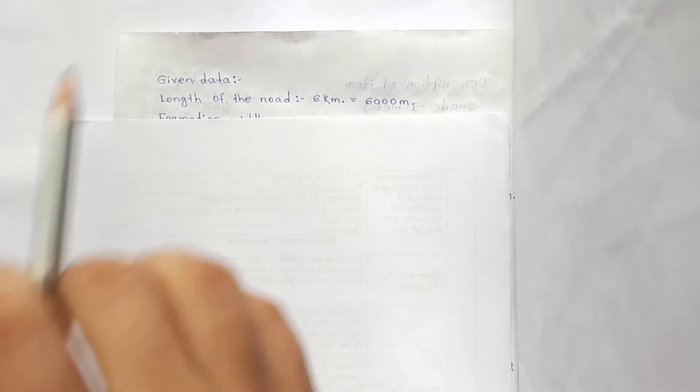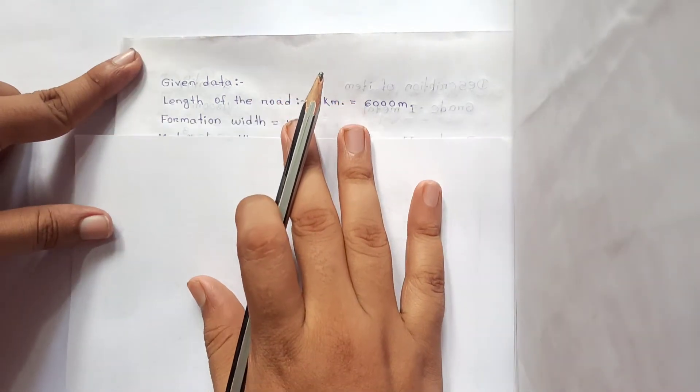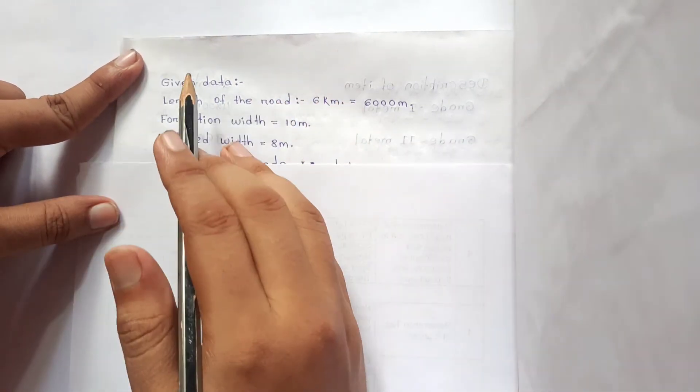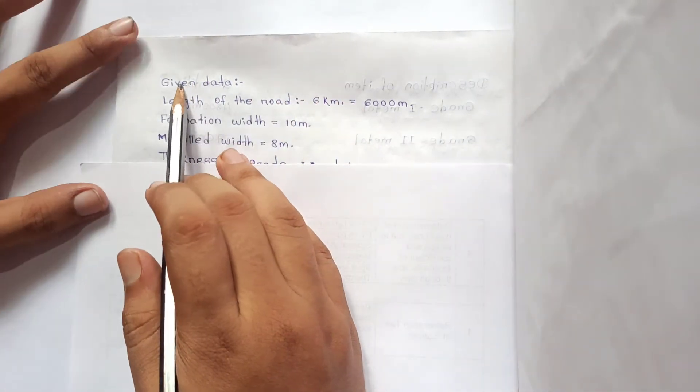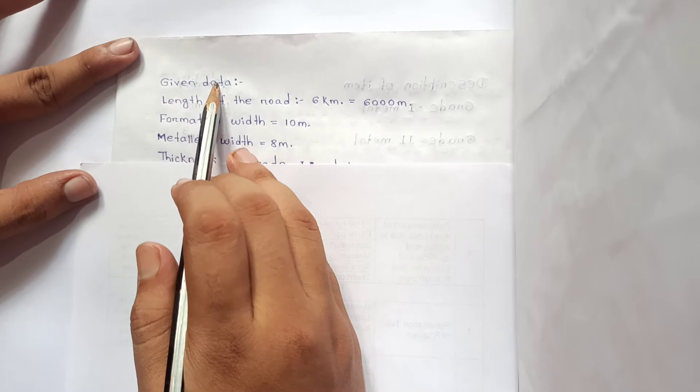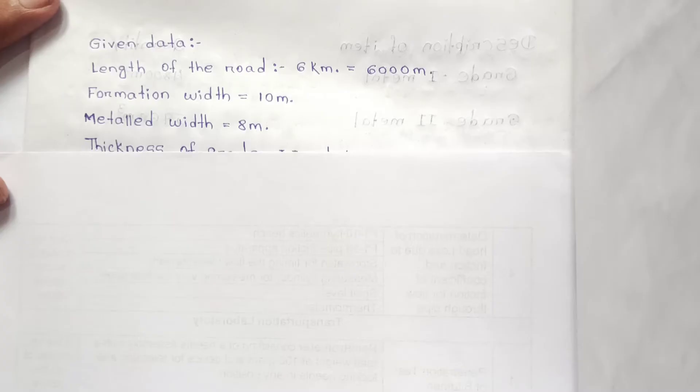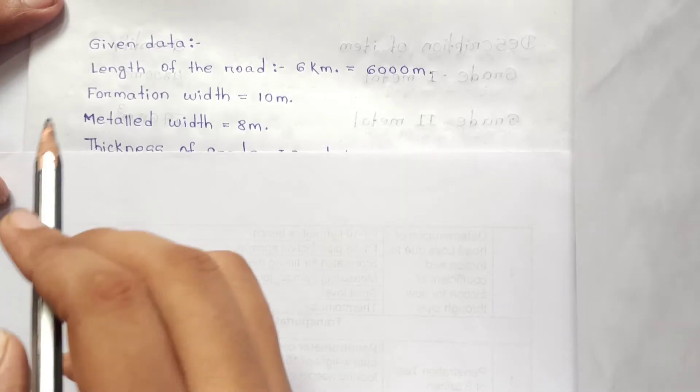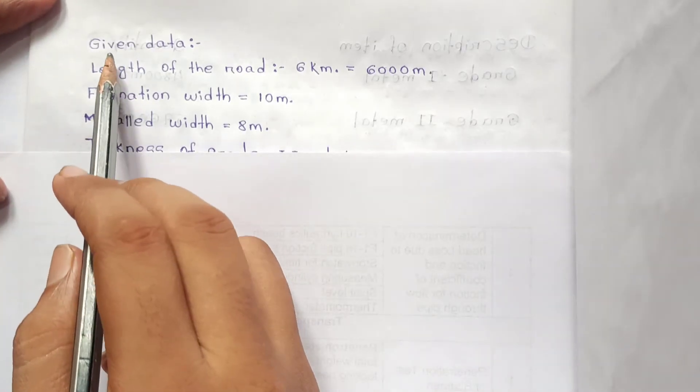If you have estimated, you can write WBM road. How do you do this first? Write the given data from the question.